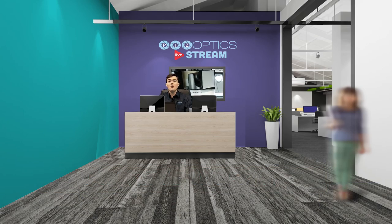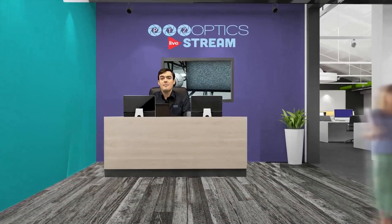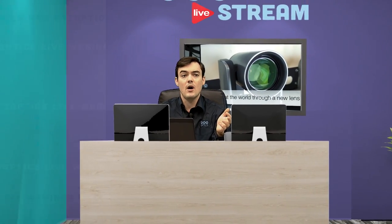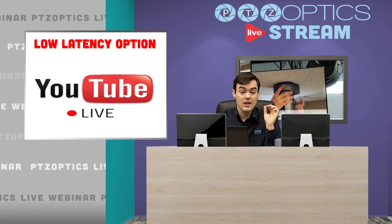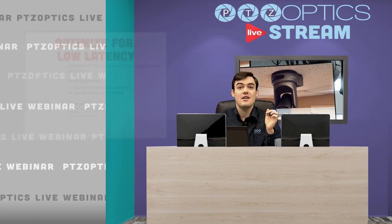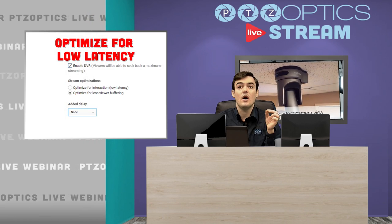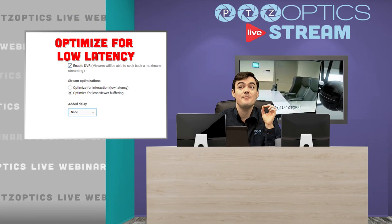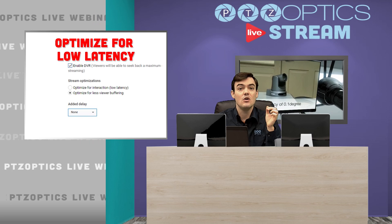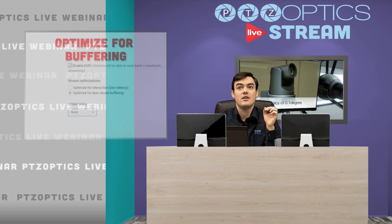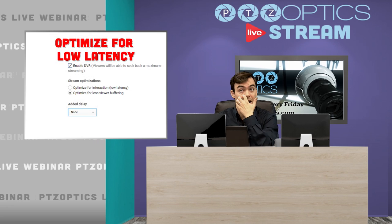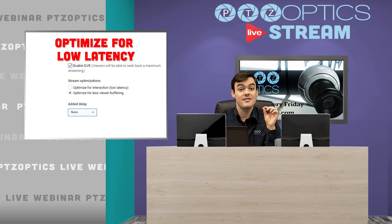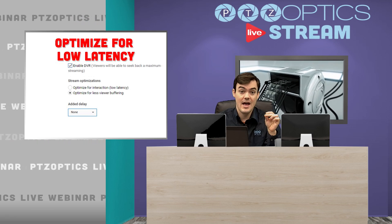There are basically two options. Option number one, when you're talking about low latency live streaming, is to do what YouTube is calling optimize for low latency. You can see here there are two options. This is in the advanced settings of your live streaming tab.